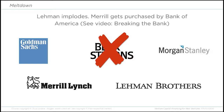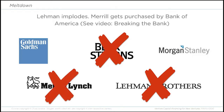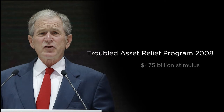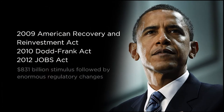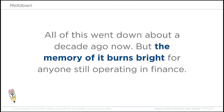Unfortunately, the carnage wasn't limited to Bear. In September of 2008, Lehman Brothers went under. Merrill Lynch was then purchased by Bank of America in distress. Morgan Stanley was effectively purchased by the largest bank in Japan. Of the original Big Five, only Goldman Sachs was left standing after the meltdown. In response, President Bush doubled down on Keynesian economics with a $475 billion stimulus package called TARP — the largest stimulus package of its kind ever. In the following year, President Obama was inaugurated and followed the Bush stimulus with an $831 billion stimulus package of his own, and several enormous regulatory bills. It's nearly 10 years since all of this went down, but it still burns bright in the minds of those who went through it, including VCs and other investors who are active in the marketplace today.